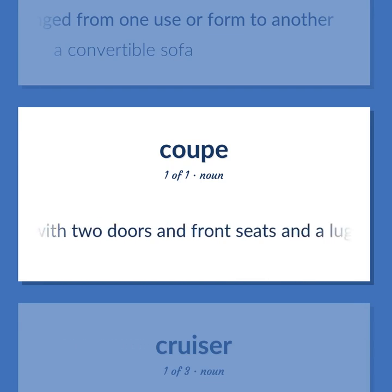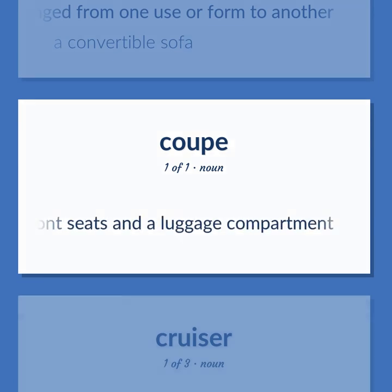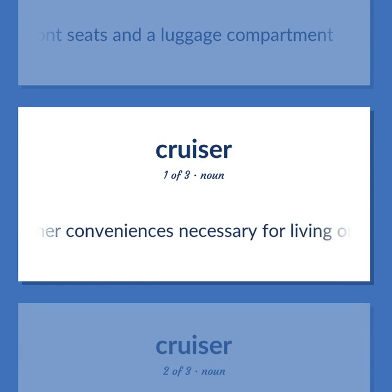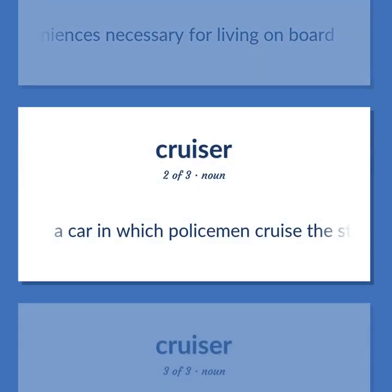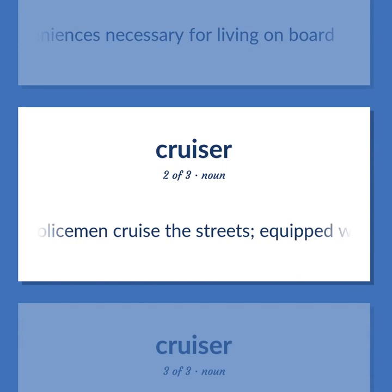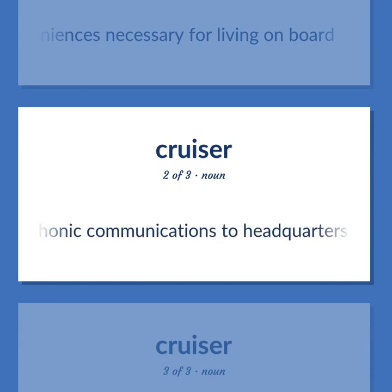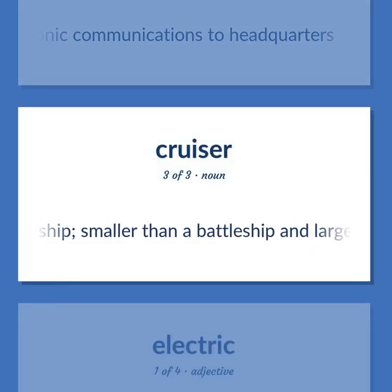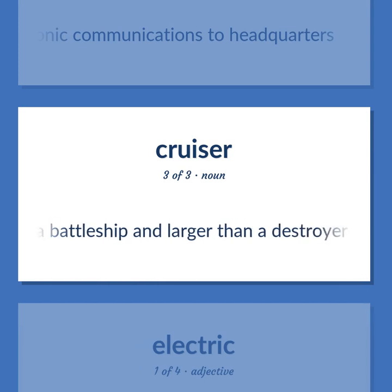COUPE: A car with two doors and front seats and a luggage compartment. CRUISER: A large motorboat that has a cabin and plumbing and other conveniences necessary for living on board. A car in which policemen cruise the streets, equipped with radio telephonic communications to headquarters. A large fast warship smaller than a battleship and larger than a destroyer.